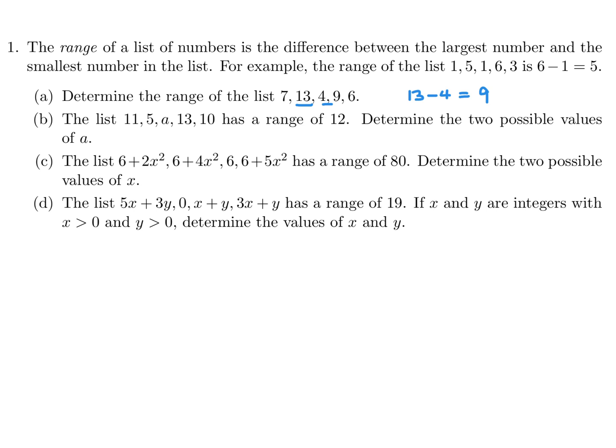The list 11, 5, a, 13, 10 has a range of 12. Determine the two possible values of a.